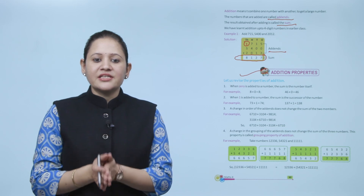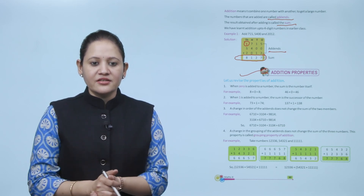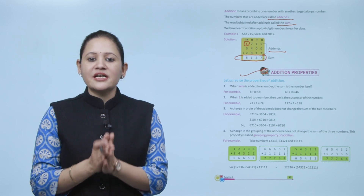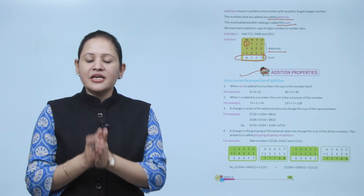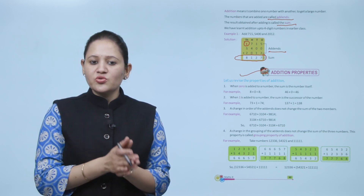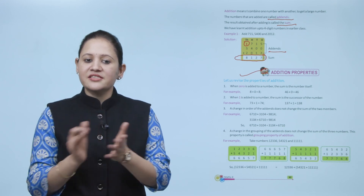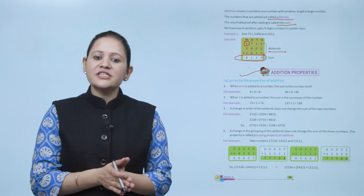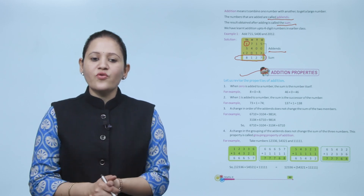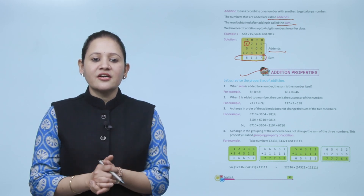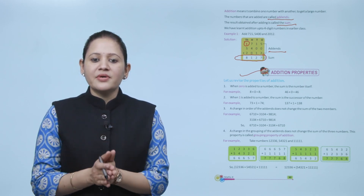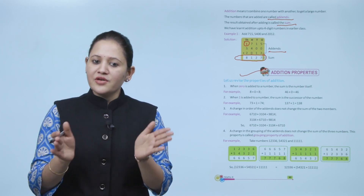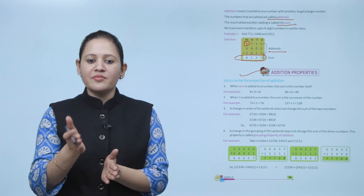Next is addition properties. Let us revise them. First, when zero is added to a number, the sum is the number itself. For example, 8 plus 0 equals 8, and 46 plus 0 equals 46. Second, when one is added to a number, the sum is the successor of the number — its next number. For example, 73 plus 1 equals 74.